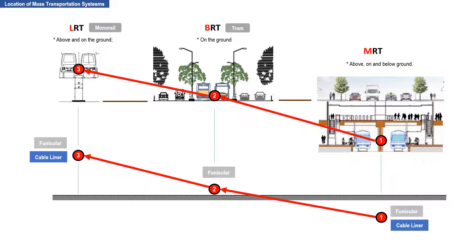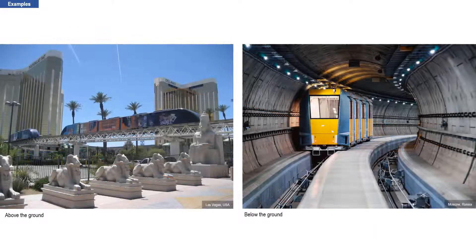These are the locations of the different types of mass transportation systems. A cable liner can be below the ground or above the ground. This is an example of a cable liner above the ground, while this is an example of a cable liner below the ground.